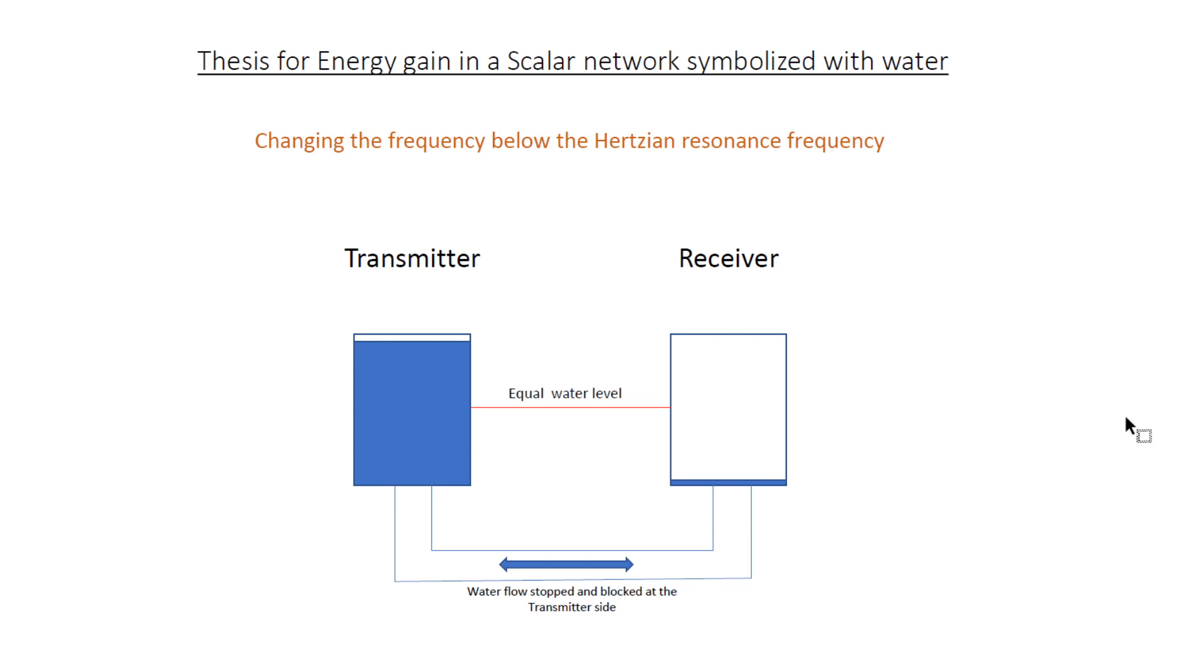On the third slide it shows the tuning to the scalar wave. All pressure is now on the receiver side and now if we change the pressure on the receiver side it has an impact on the transmitter. The more pressure the receiver can take, the lower the pressure is on the transmitter.